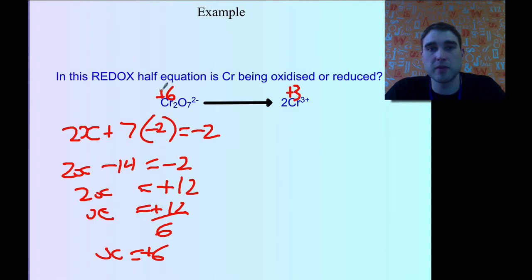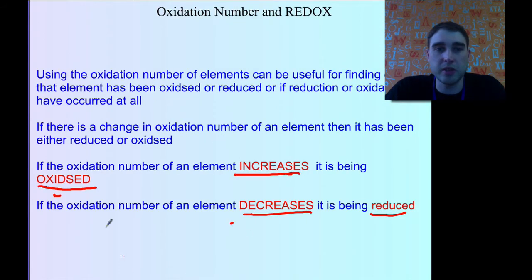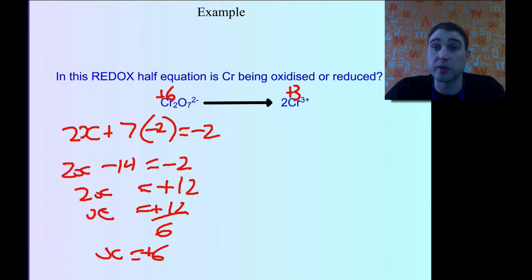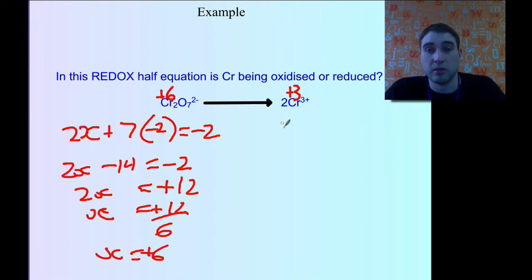So we've gone from plus 6 to plus 3 — the oxidation number has decreased. That means the chromium has been reduced in this reaction.